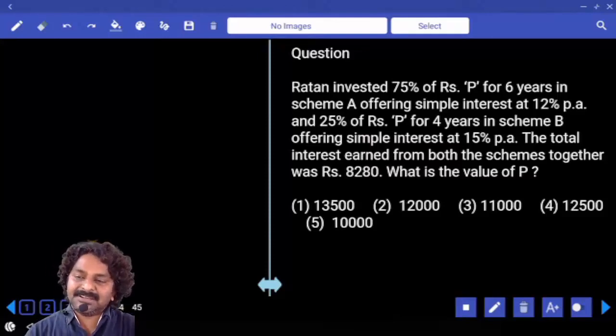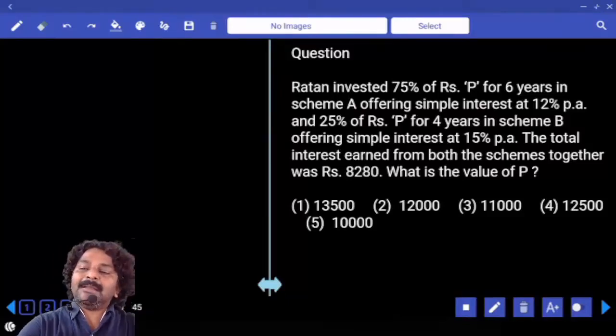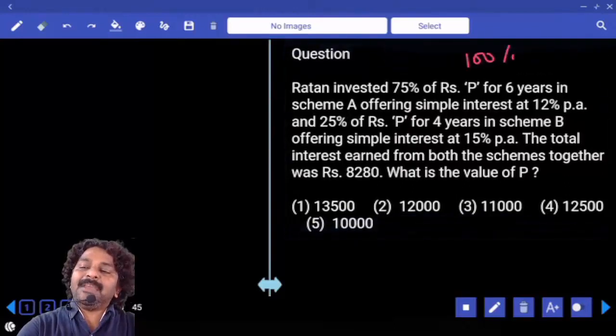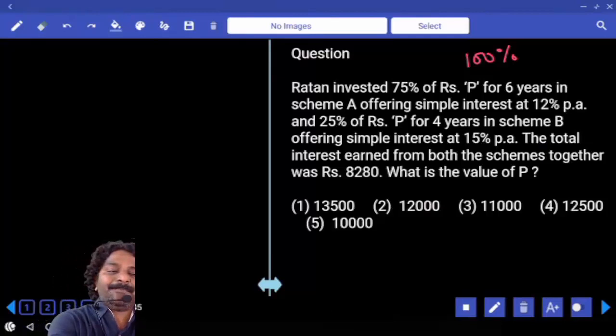Ratan invested 75% of P rupees for 6 years in scheme A offering simple interest at 12% per annum. Let P value be 100%, is that ok? Then 75% is invested for how many years?